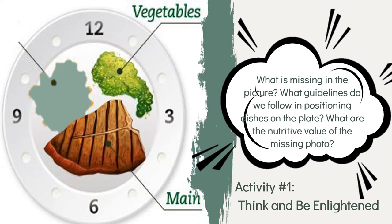Let's have Activity 1: Think and Be Enlightened. Study the picture on the screen and try to answer the following questions: What is missing in the picture? What are the guidelines we follow in positioning dishes on the plate? And what are the nutritive values of the missing food? The arrangement and overall styling of food upon bringing it to the plate is termed plating. Some common styles include a classic arrangement of the main item in the front with vegetables or starches in the back, or a stack arrangement leaning upon a vegetable bed. What you see in the picture is an example of classic arrangement.